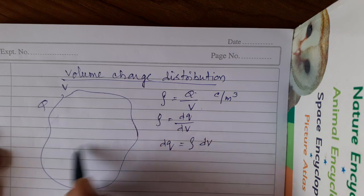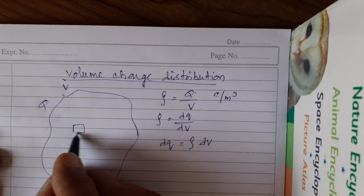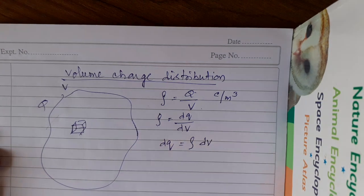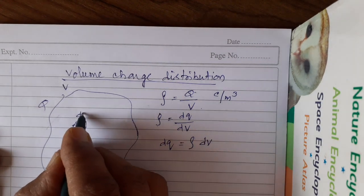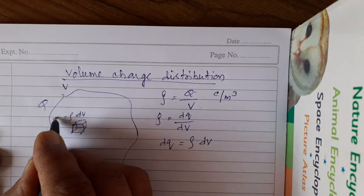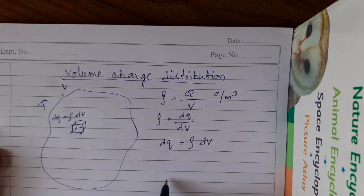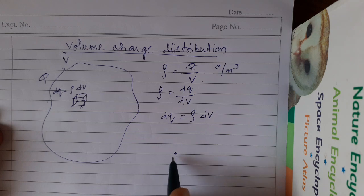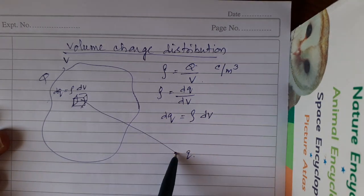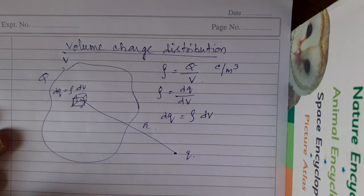So in this volume, I consider a small element cuboid like this, which has got a volume dV. The charge on this will be rho dV, which is equal to dQ. I keep a charge here somewhere, small Q. I want to find the force between these two.